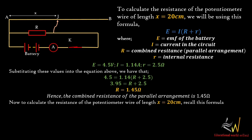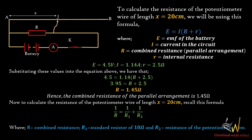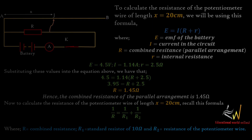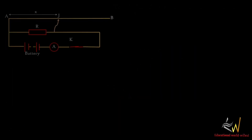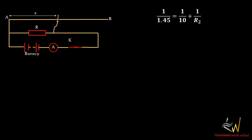Now, to calculate the resistance of the potentiometer wire of length S equal to 20 cm, we use the parallel resistance formula: 1 over R equals 1 over R1 plus 1 over R2. Here R is the combined resistance, R1 is the standard resistor of 10 ohms, and R2 is the resistance of the potentiometer wire. Substituting: 1 over 4.5 equals 1 over 10 plus 1 over R2, and we solve for R2.